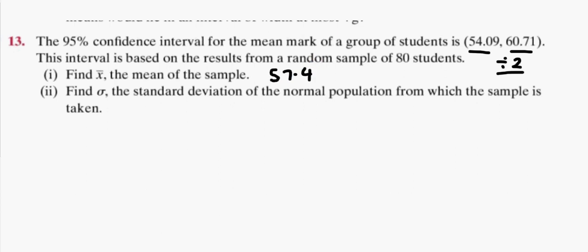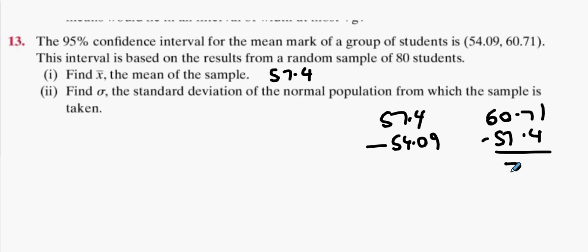Now calculate how far it is away from either side. So you can either do 57.4 take away 54.09 or you can do 60.71 take away 57.4. You should get the same answer: 3.31 is the error either side. Your formula is your average plus or minus 1.96 times your standard deviation divided by root n.